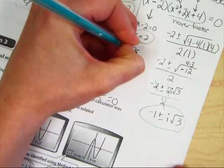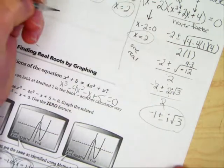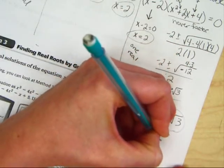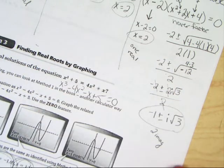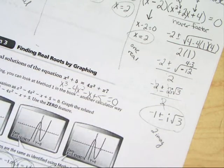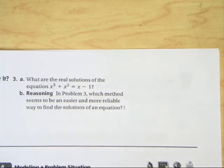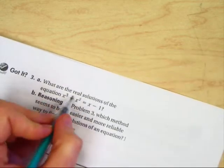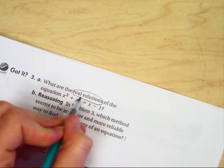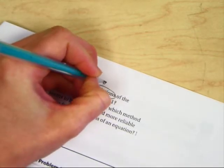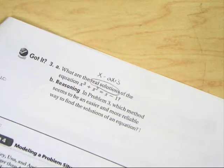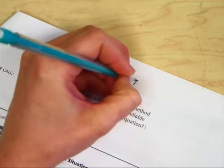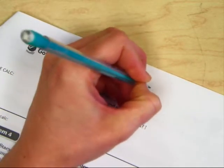So you have one real solution up here, and you have two imaginary solutions down here, for a total of three solutions.